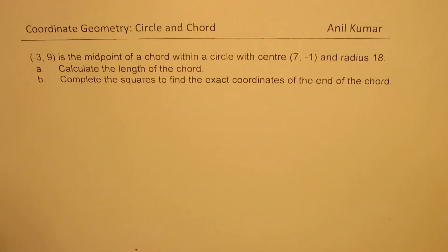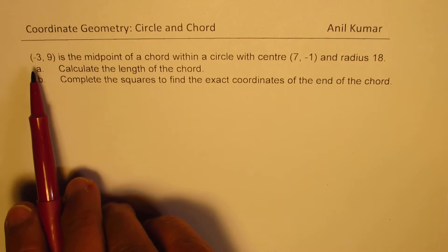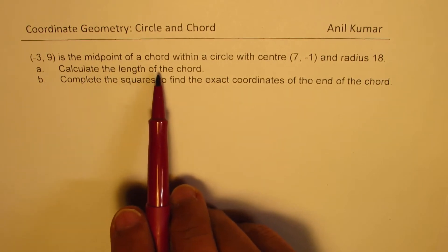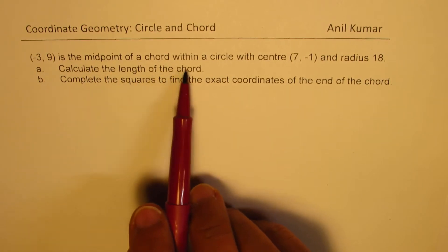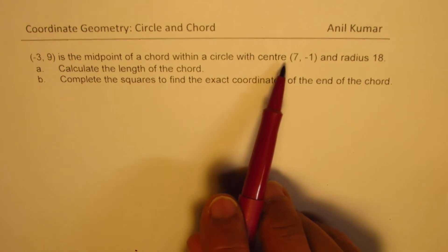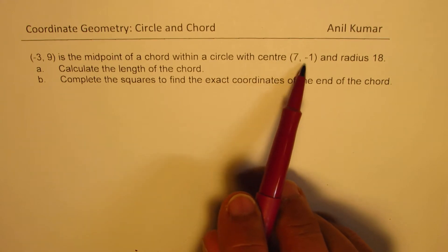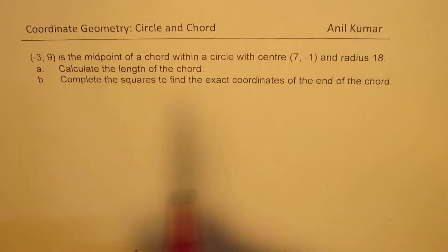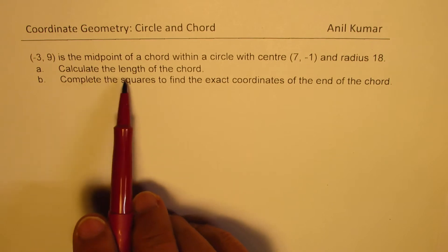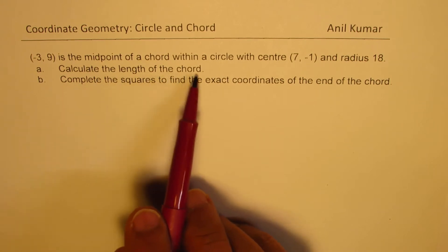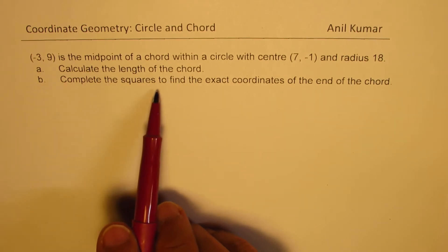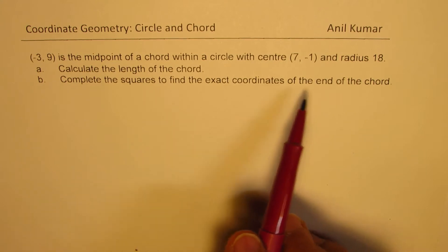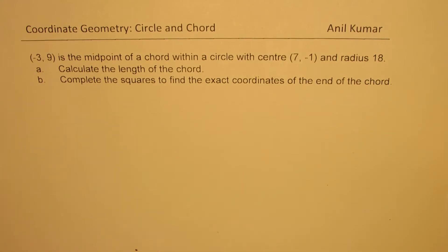The question here is: minus three, nine is the midpoint of a chord within a circle with center seven, minus one and radius 18. Calculate the length of the chord. Complete the squares to find the exact coordinates of the end points of the chord.